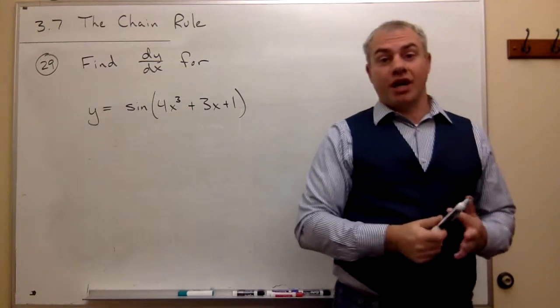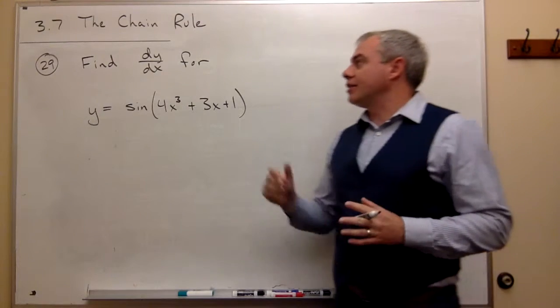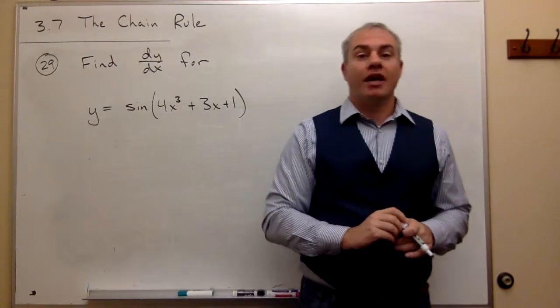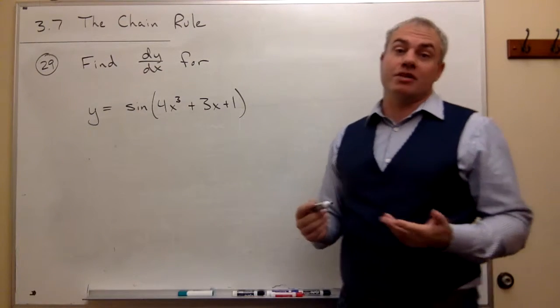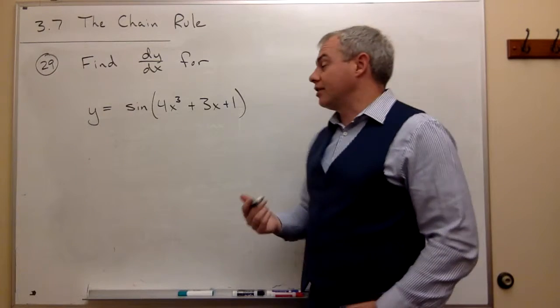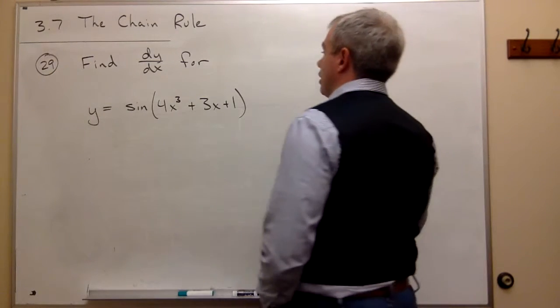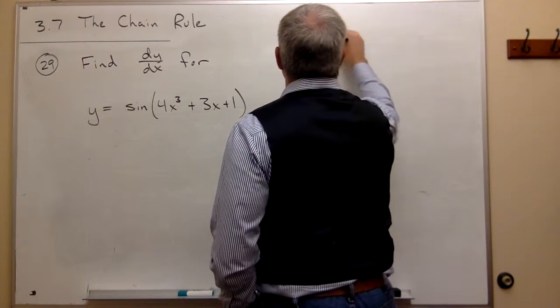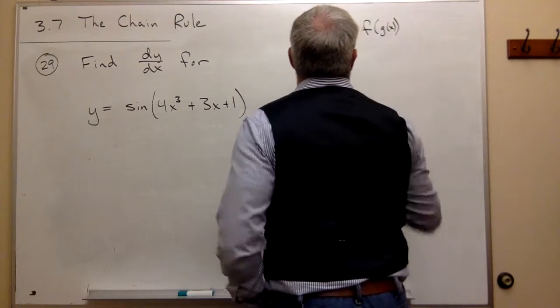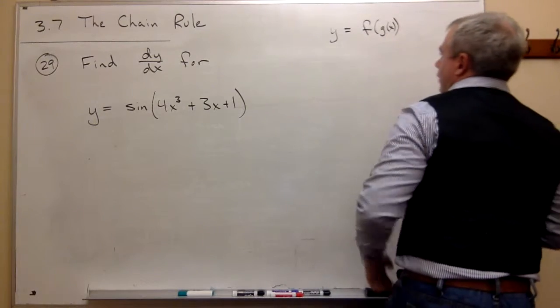Alright, so we're using the chain rule, and there's some really important things that we have to remember when we use the chain rule. The first of them is just what's the formula for taking the derivative of something using the chain rule. So if I have y equals something like f of g of x, so a function of a function,